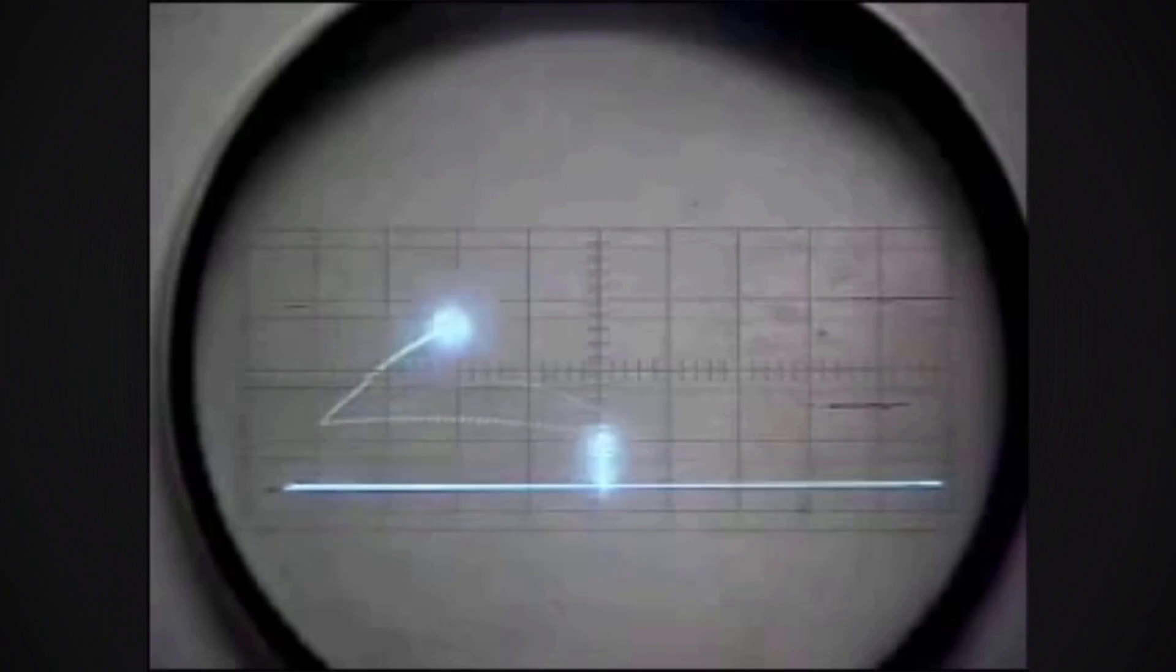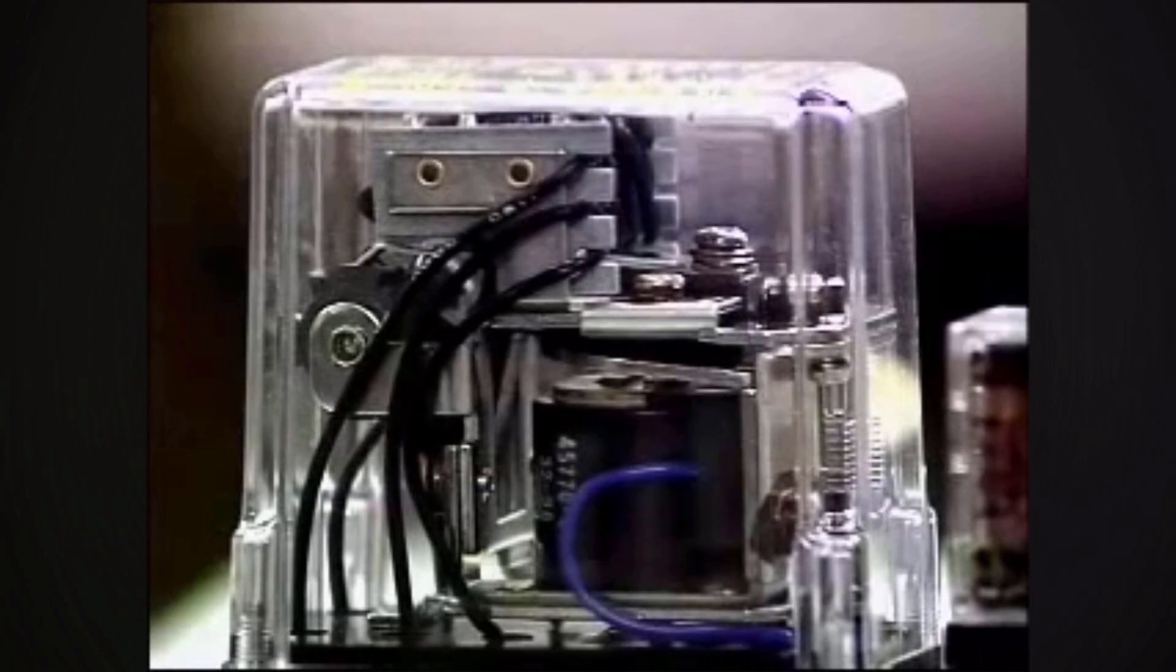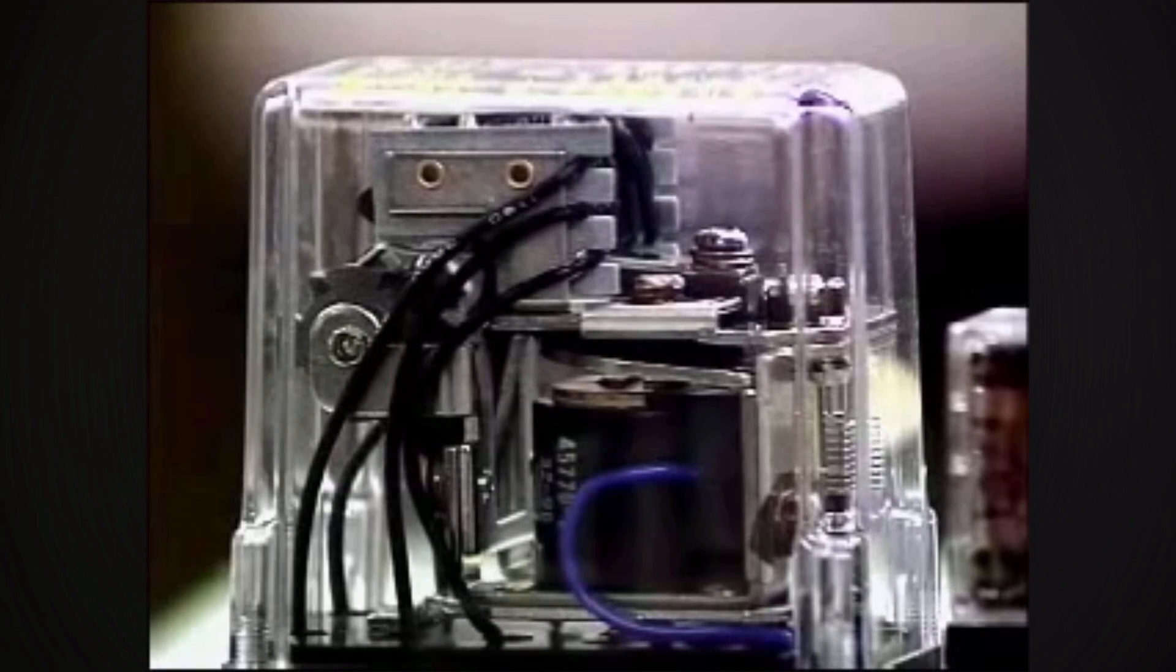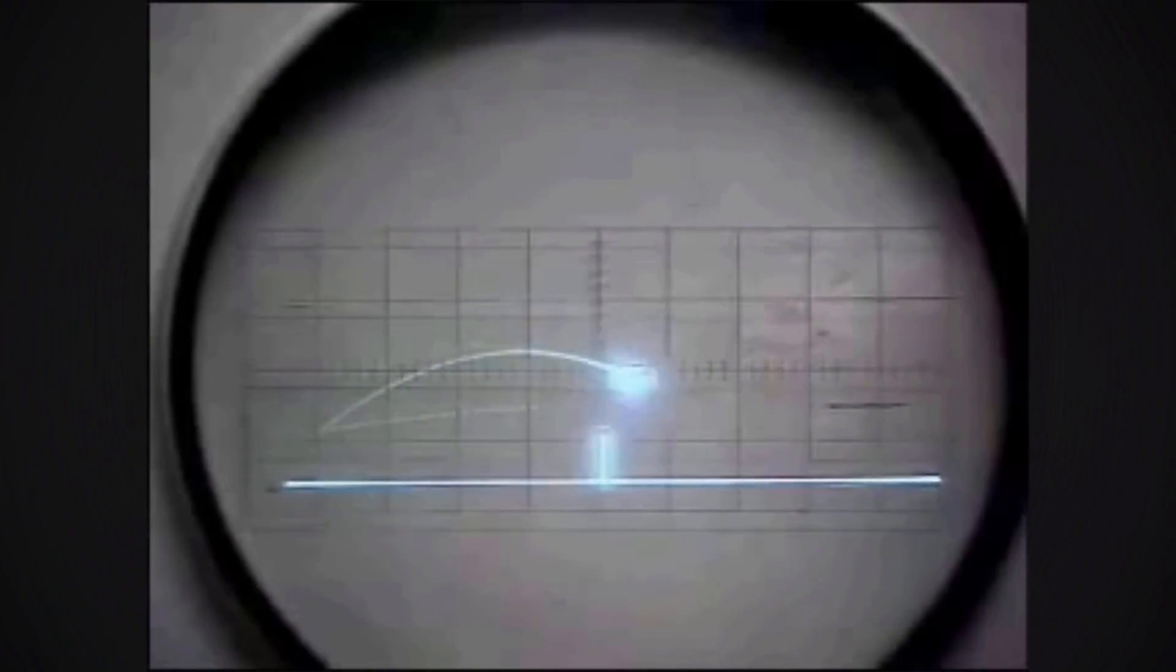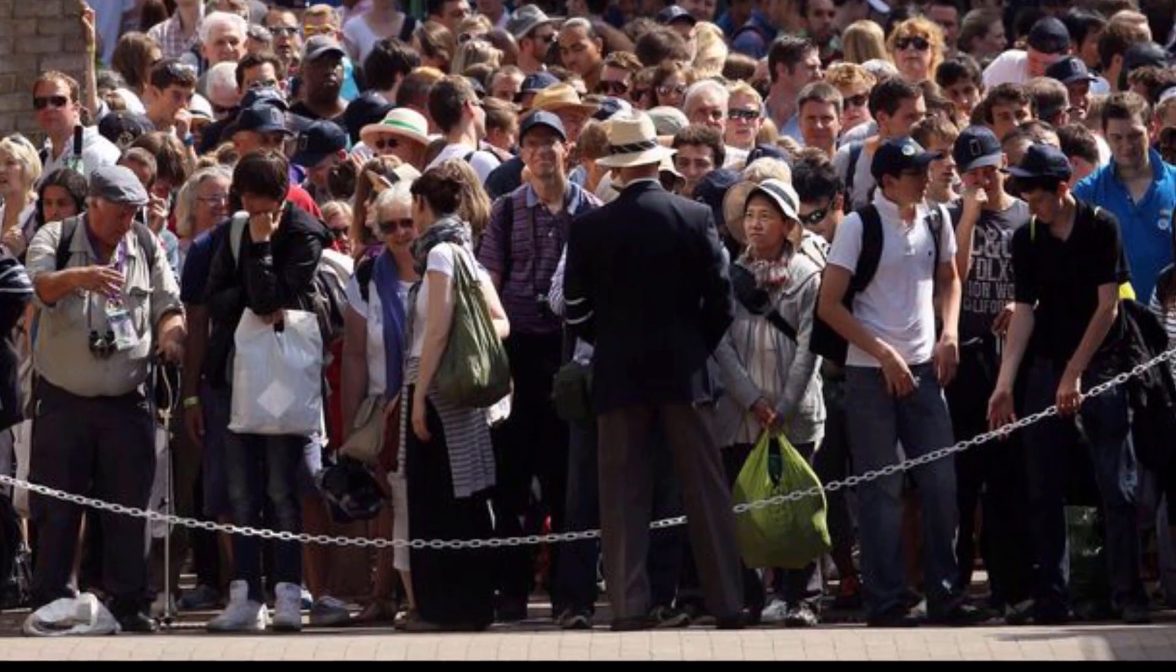One representing the ground and one representing the net. The ball was just a dot that bounced back and forth. Visitors loved it. It quickly became the most popular exhibit with people standing in long lines to get a chance to play.